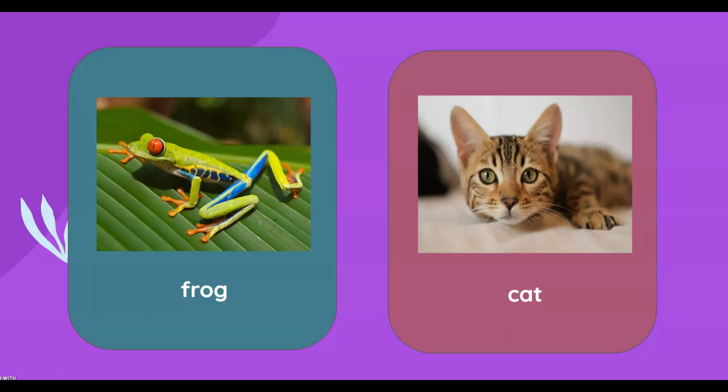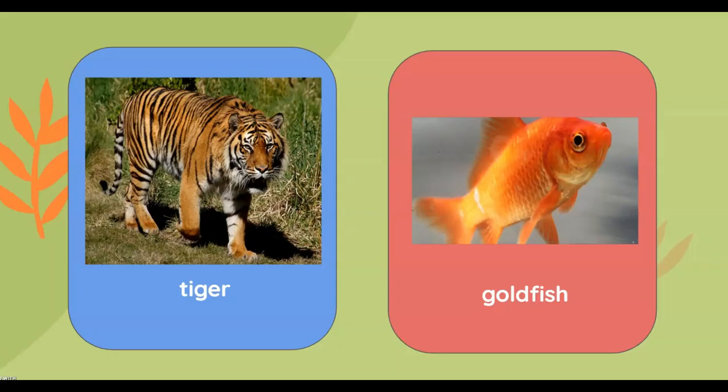Which one is the mammal here, the frog or the cat? It is the cat. Look at the fur of the cat. Remember what I told you: all mammals have hair or fur.